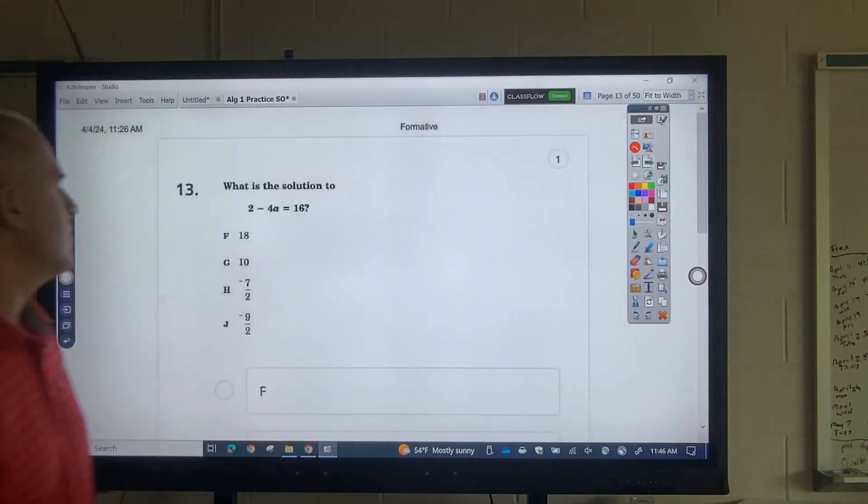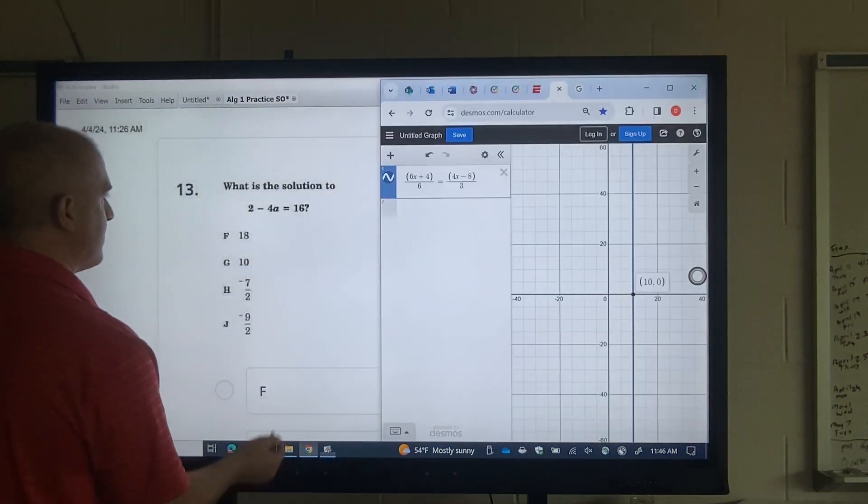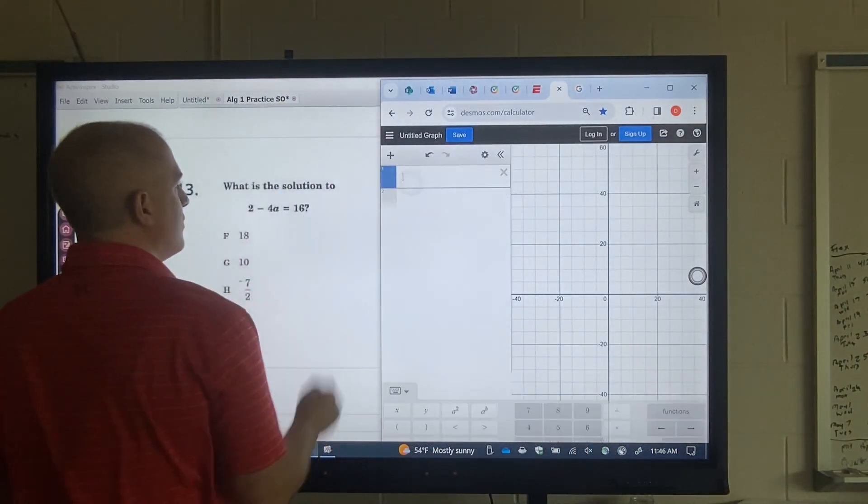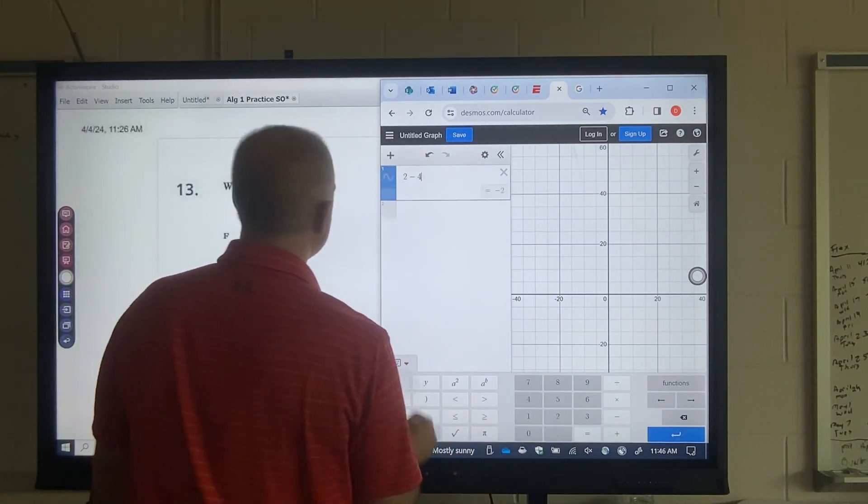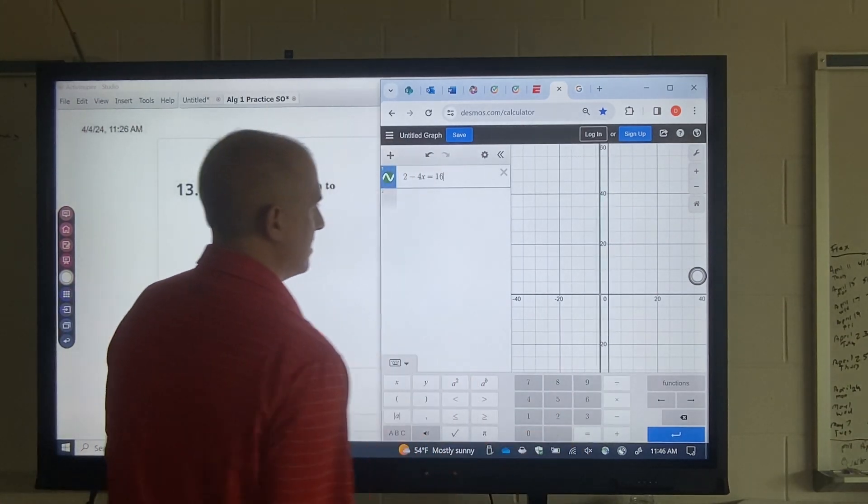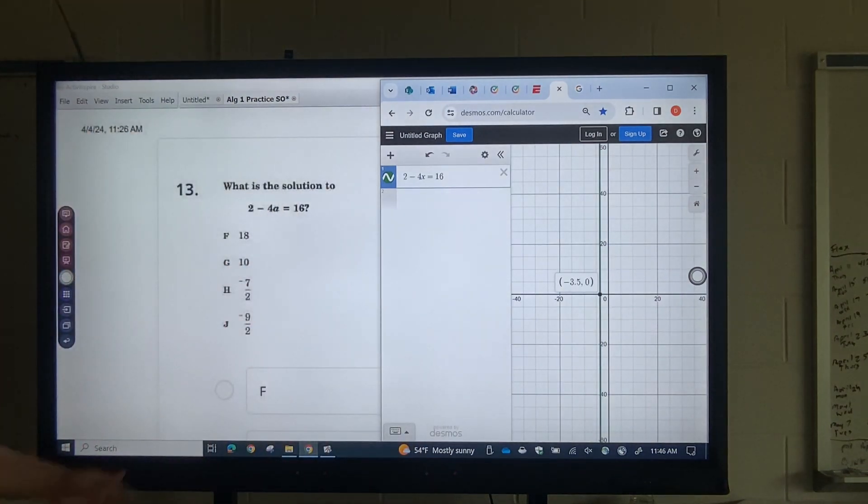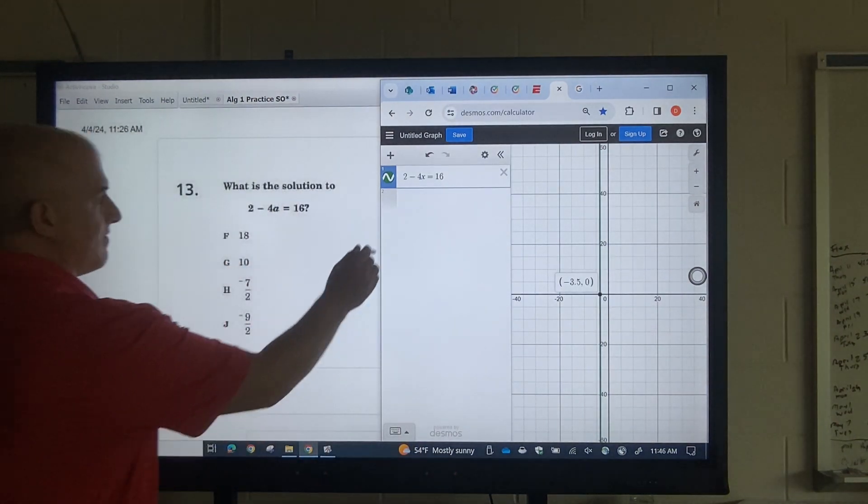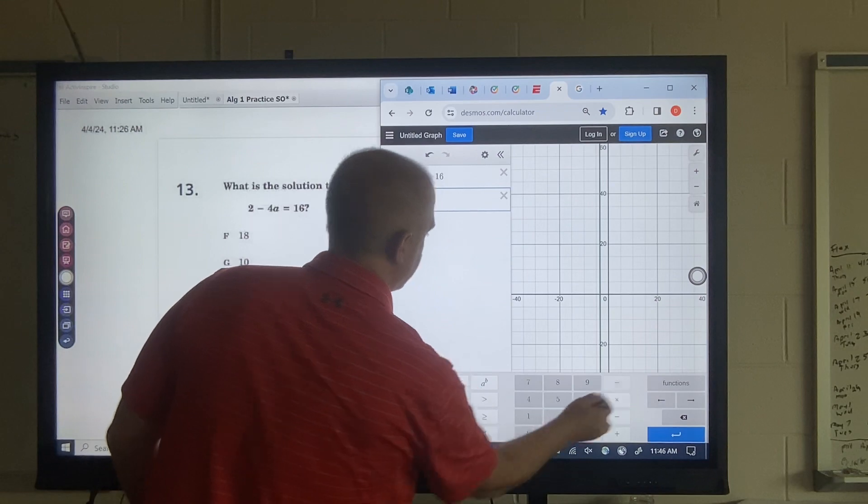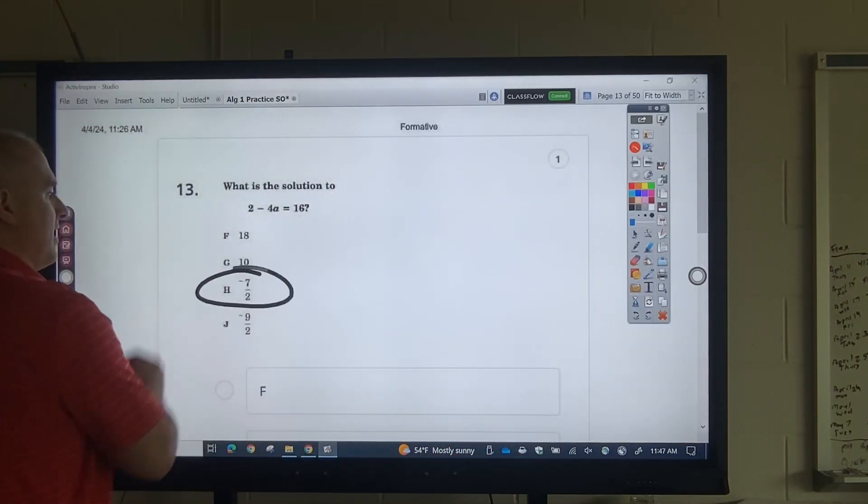Okay. Question 13. What is the solution? Same thing. Once again, don't use a, use x. Negative 3.5. So you're just like, oh, which one is that, Mr. Evans? Well, let's do negative 7 divided by 2. Well, that's negative 3.5.